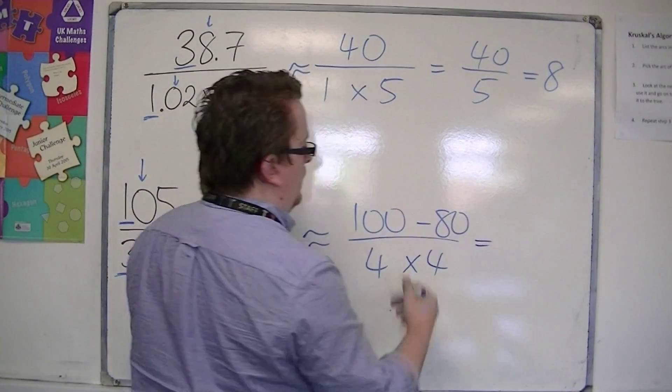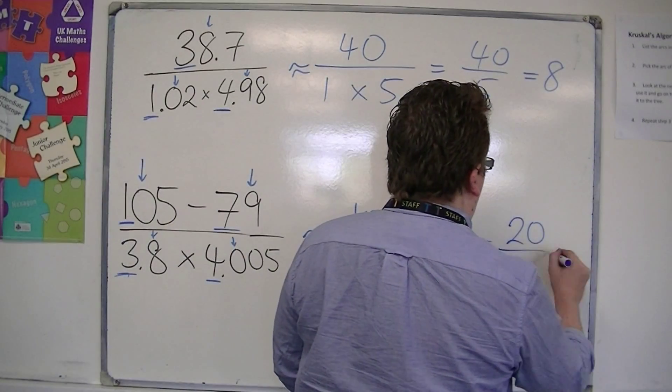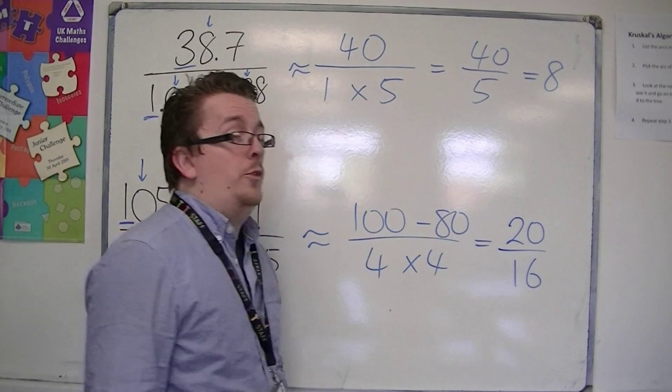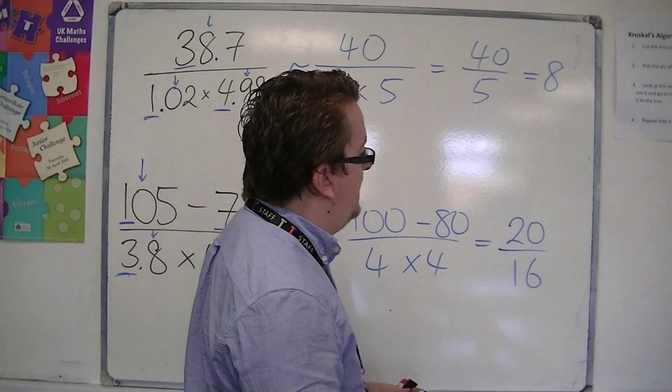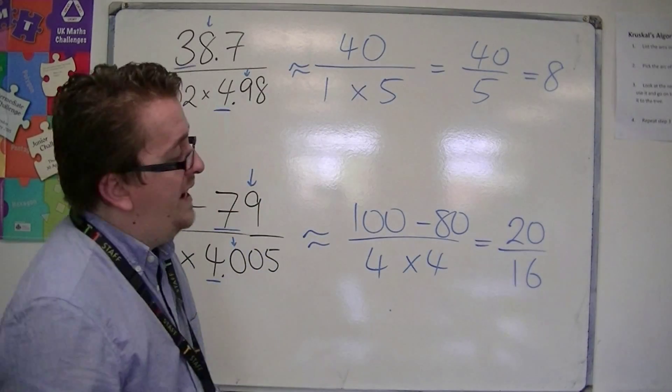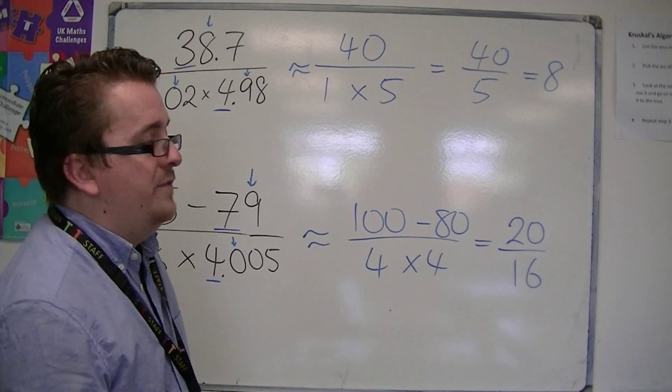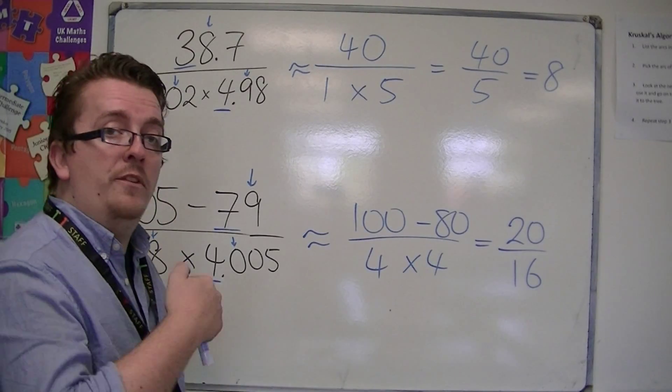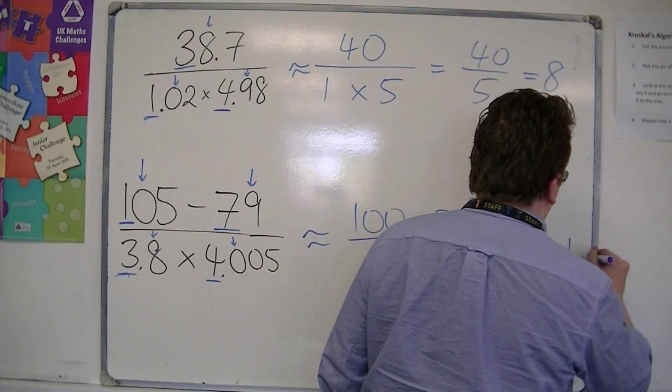3.8 would round to 4. So we end up with 20 on the top, 16 on the bottom, and 20 divided by 16 isn't particularly nice. It's the same as 10 divided by 8, it's 10 divided by 8 is 5 divided by 4, which is 1.25.